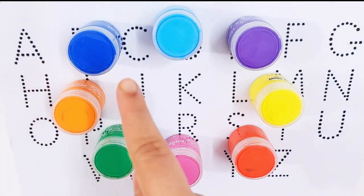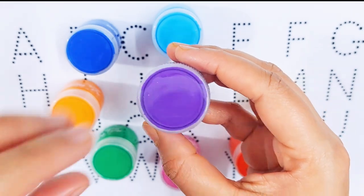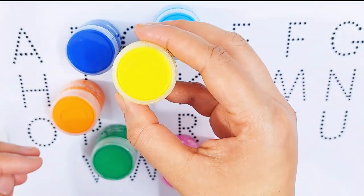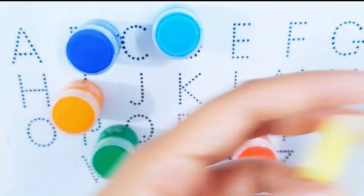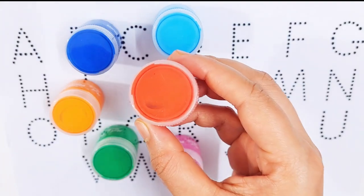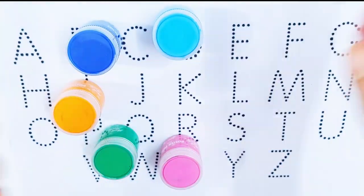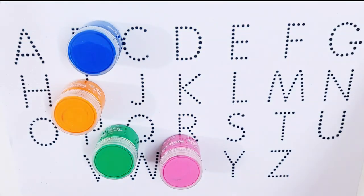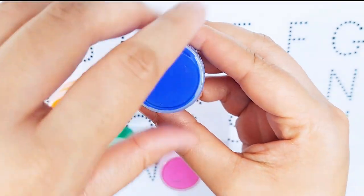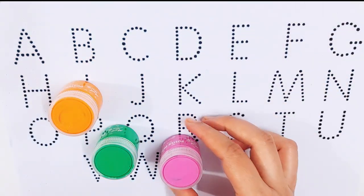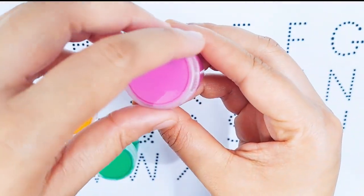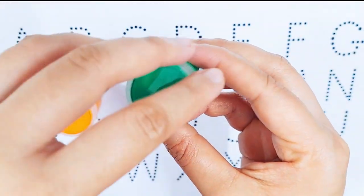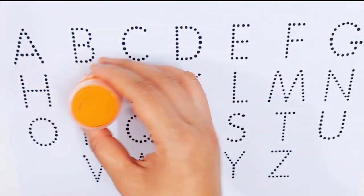Hello kids, let's learn some color names. Violet color, yellow color, red color, sky blue color, dark blue color, pink color, green color, orange color.